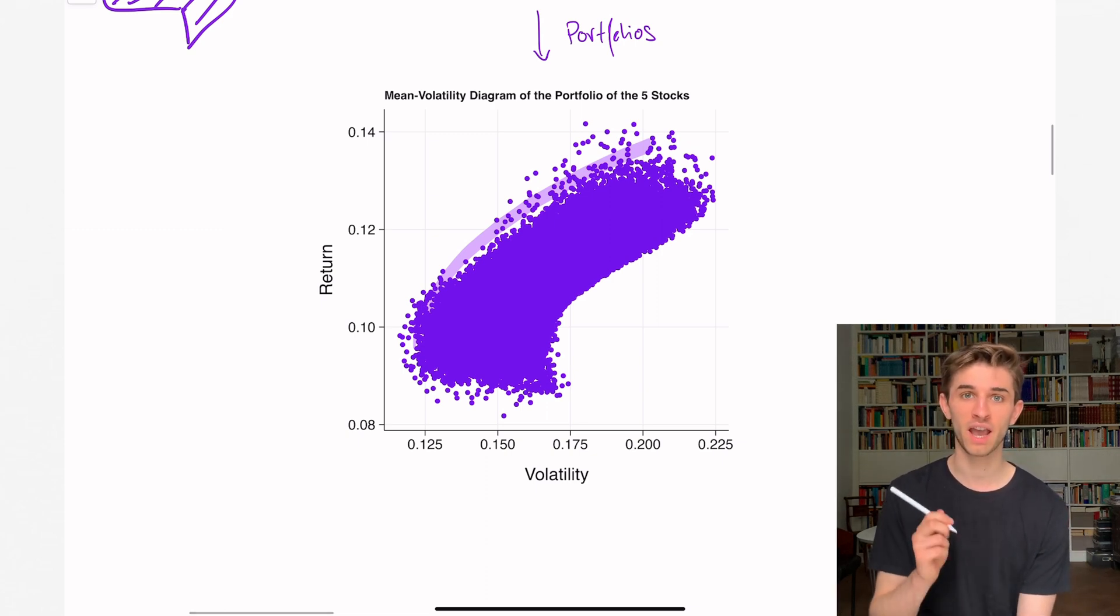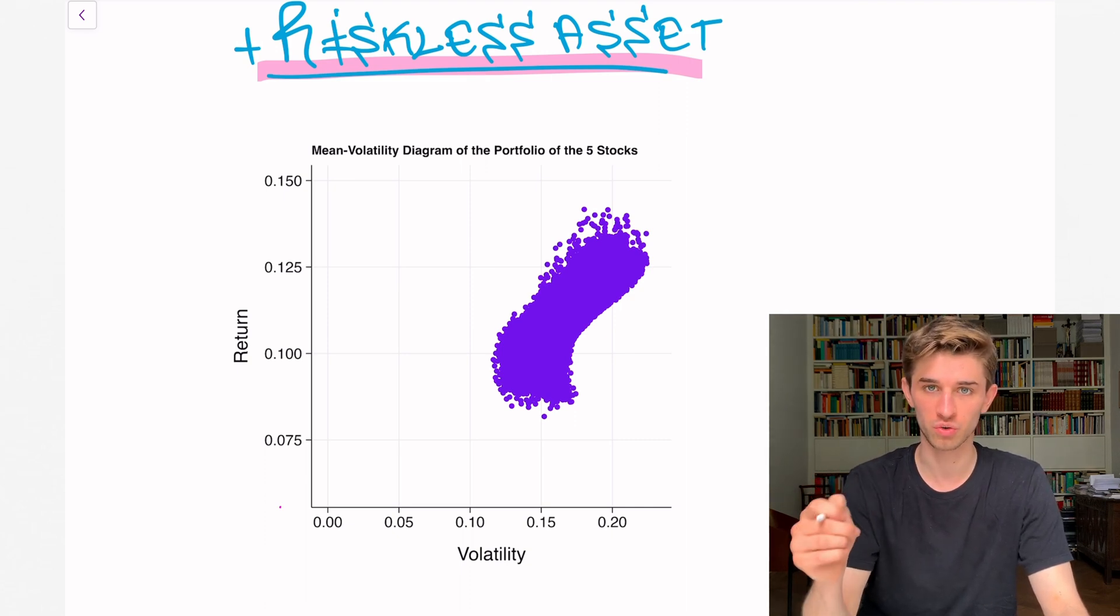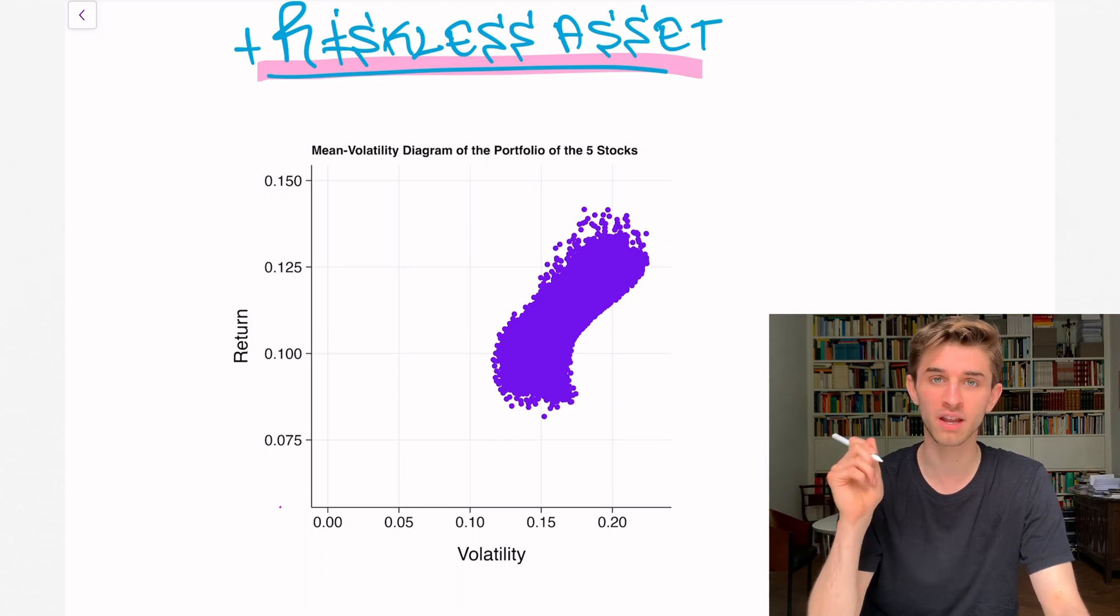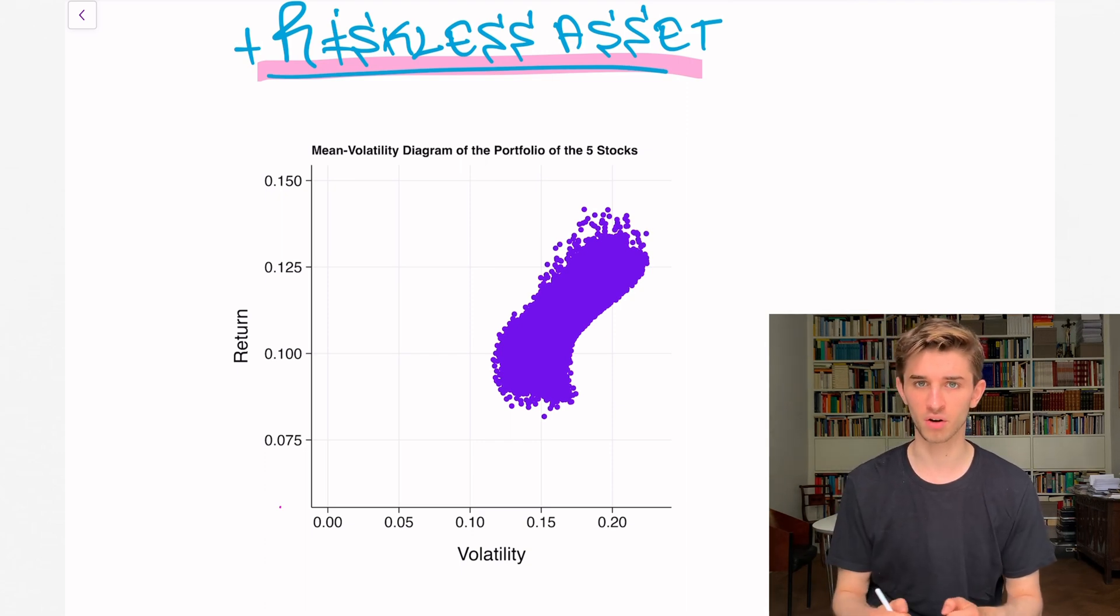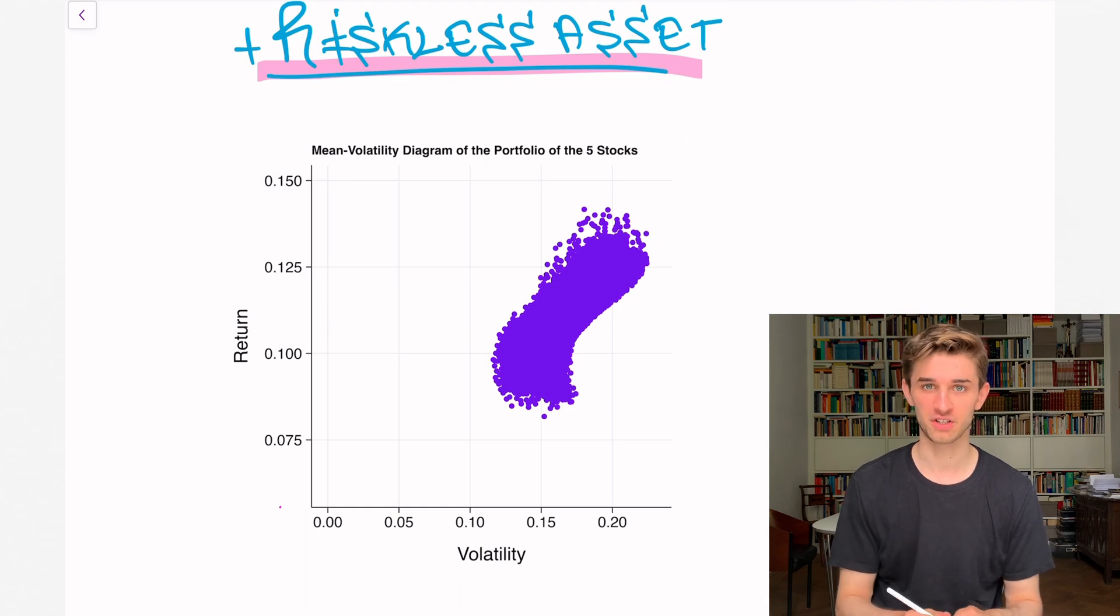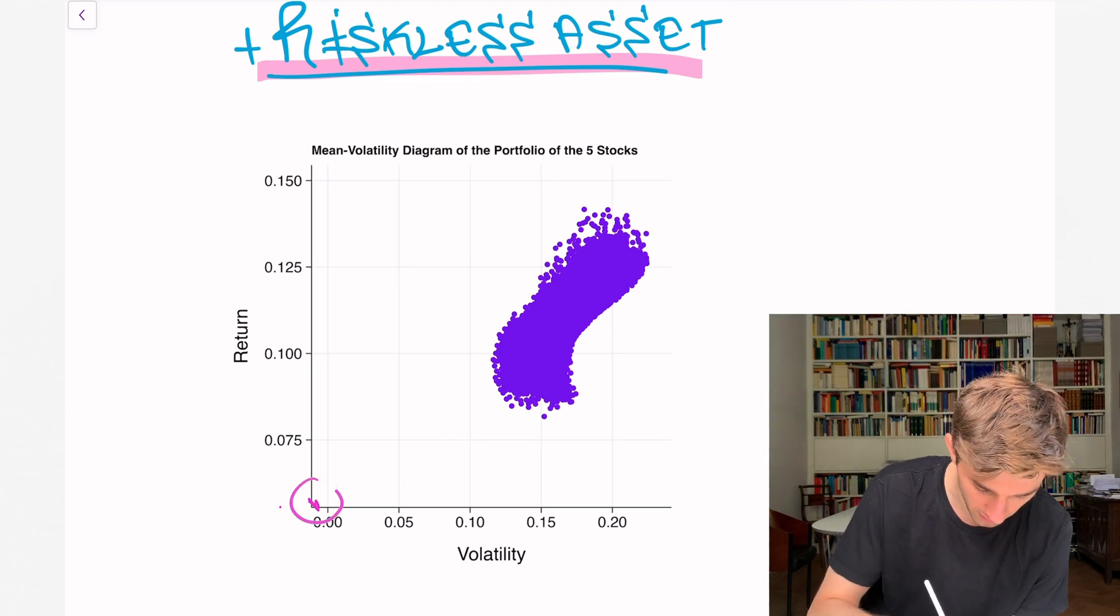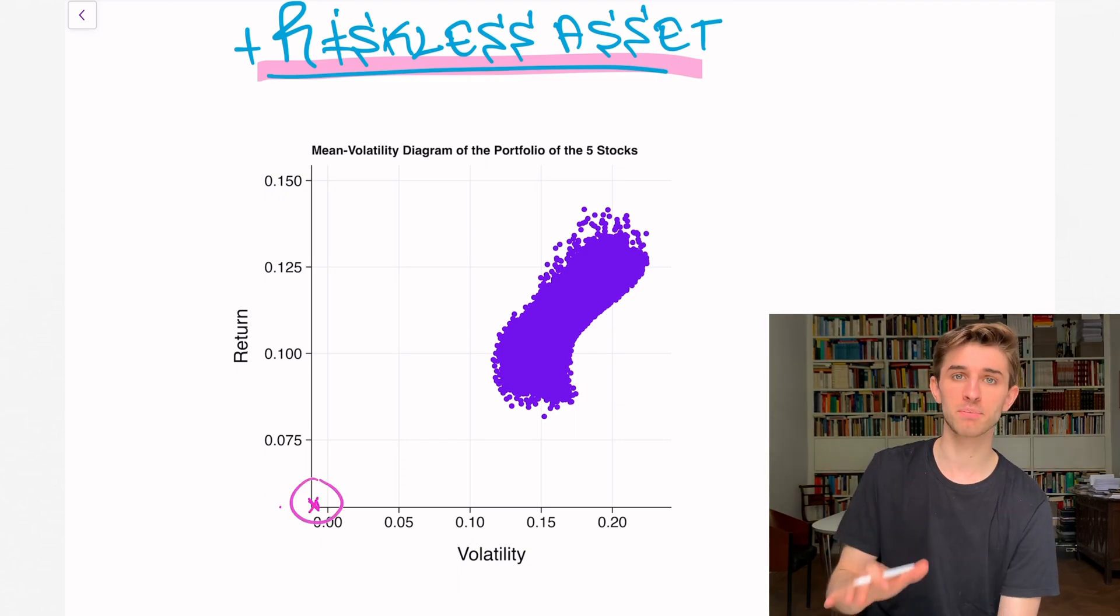The new thing now comes when we add another asset, a riskless asset. This is the portfolios of the five stocks I just showed you. Now let's add a riskless asset, an asset which has zero volatility. That could be, for instance, a US government bond. Most of the time we assume the US government is so rich it will never fail to repay their debt. Let's say the US government bond has a net return of 6%. So in our mean volatility diagram, it's here.